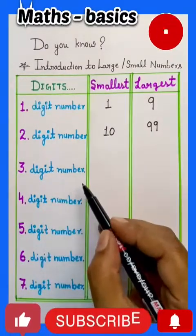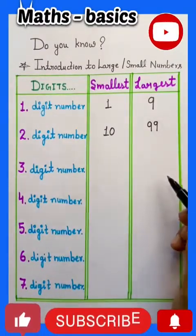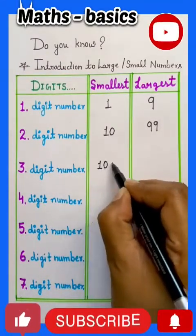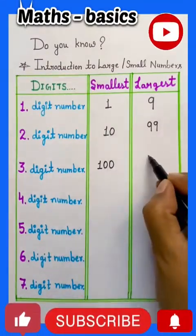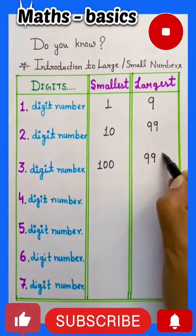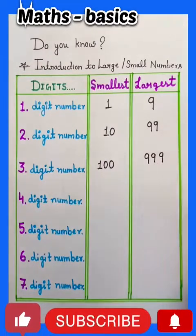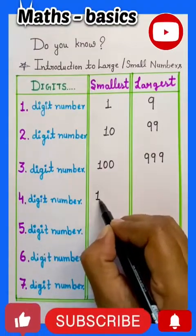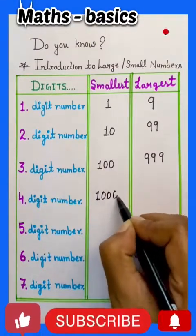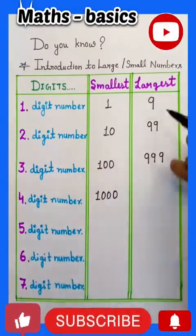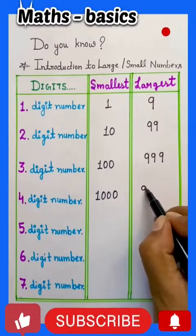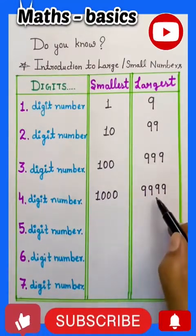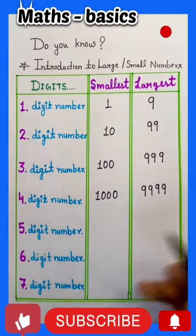Three digit largest number and smallest number. The smallest number is one double zero, which is 100, and the largest number is nine nine nine, which is 999. The four digit smallest number is one triple zero, which is 1000, and the four digit largest number is nine nine nine nine, which is nine thousand nine hundred ninety nine.